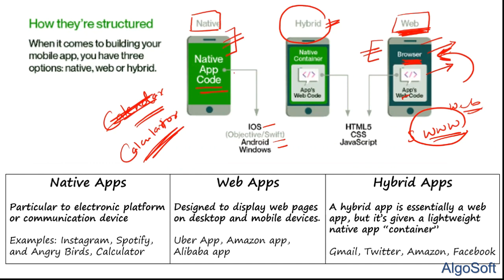Hybrid apps use mobile hardware like speakers, cameras, and other device features alongside real-time server data. Don't worry if this isn't completely clear yet — the more we code, the more we'll understand these applications. Any other questions before we move to the Software Development Lifecycle?